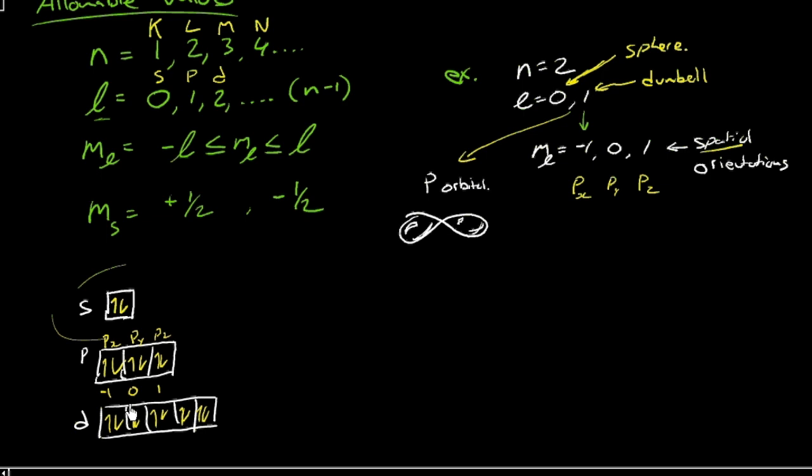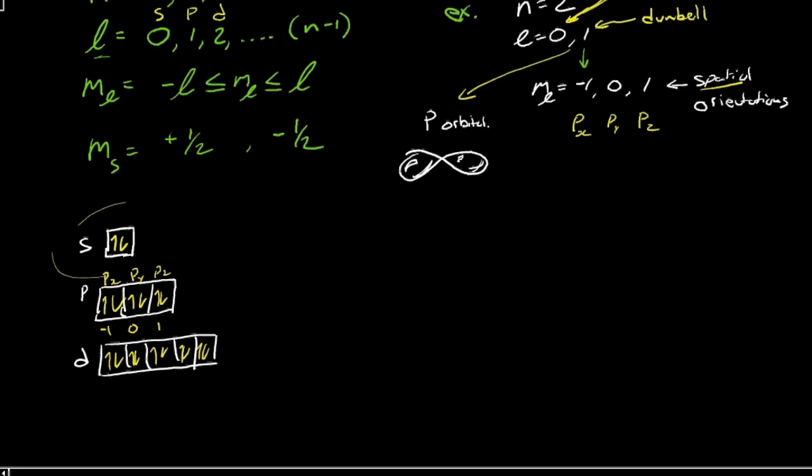So those are the allowable values for the quantum numbers. And the final thing that I will show you is what's the relative energy level for all of these possible combinations of quantum numbers? There's a little memory aid that you may have seen, where you write 1s, and then below that 2s, and then 2p, then 3s, 3p, and then 3d. So we're going up to increasing values of angular momentum quantum number. This little pyramid is describing these same allowable values that I just mentioned to you up there. So then we get to n equals 4.